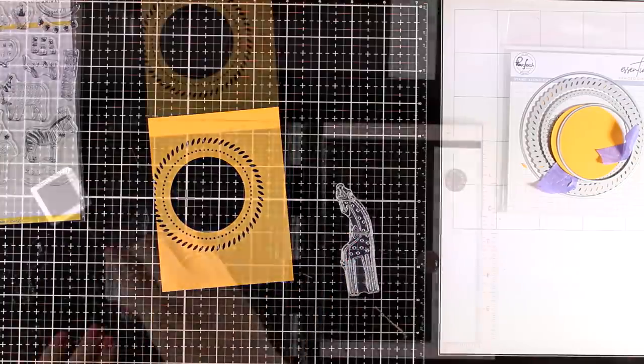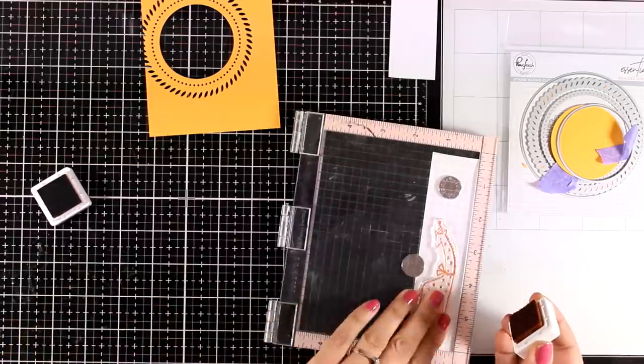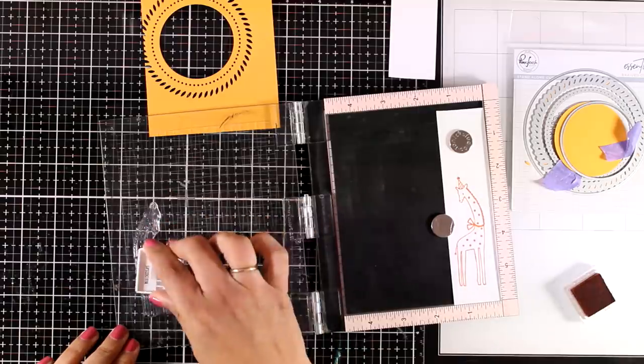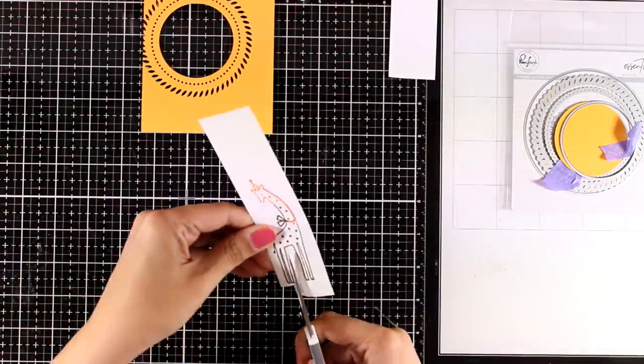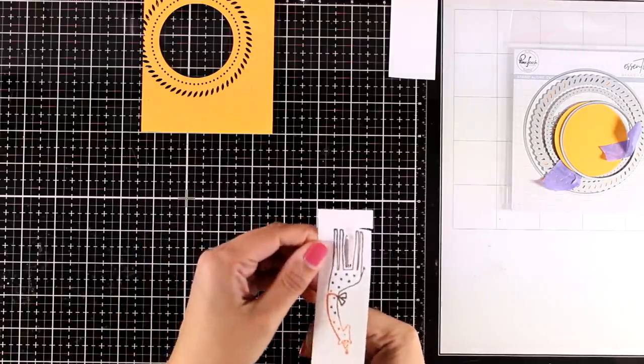As my focal point I'm going with this stamp set by Pinkfresh Studios. This is a really fun stamp set and I'm going to use the giraffe. The design I'm going for would work with any focal point. I'm not using black to stamp my giraffe - instead I'm combining a couple of inks. This is a great technique because it provides some color on your stamped image but you don't have to color inside the lines, so it's quick and easy.